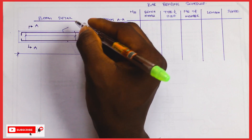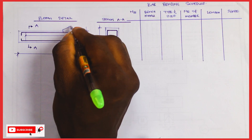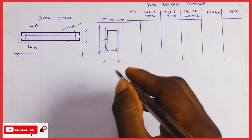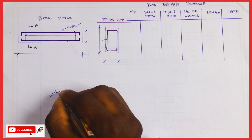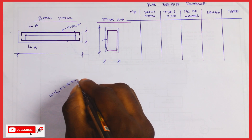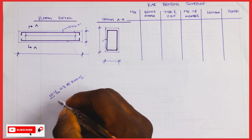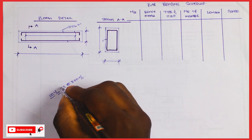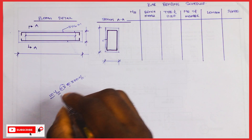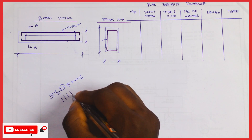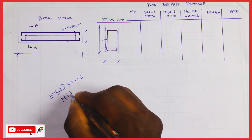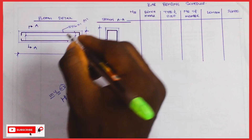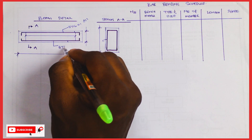This is the top reinforcement — let's make it 3Y16, mark it 01. And this notation: 10Y10 at 300 means 10 numbers of Y-type diameter 10, benchmark 03, at 300mm center to center. So 10 of these are needed along the span, with a distance of 300mm between each, from A to J.